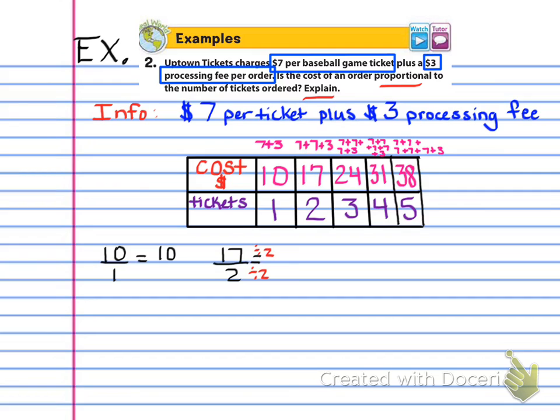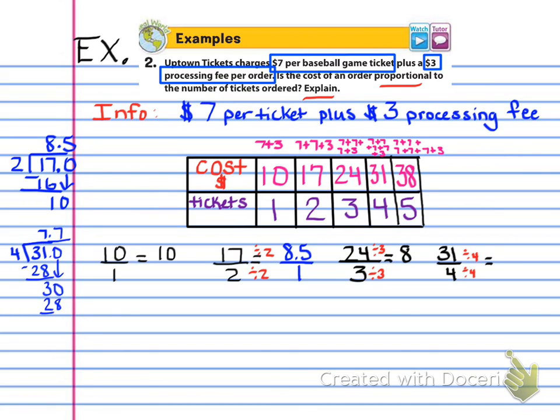So now we're going to go ahead and write all of those as ratios and we're going to simplify them. So as you can see here, I have simplified 10 over 1 to 10. Then 17 divided by 2, when I divide the top and the bottom by 2, I get 8.5 to 1. So notice I've done the division over there on the side. You can just use the calculator. That's totally fine. Then 24 to 3 obviously simplifies to 8. And then 31 to 4 simplifies or divides out to be 7.75 to 1.